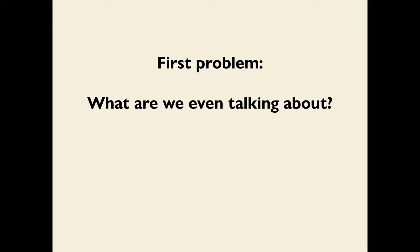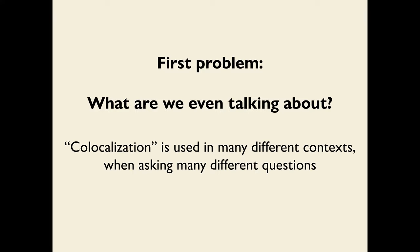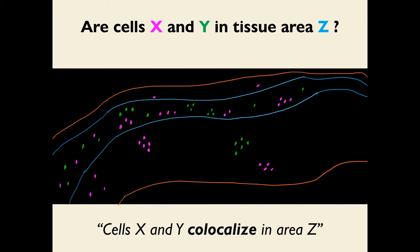There's a first problem with co-localization: what are we even talking about? Co-localization is a very loaded term used in many different contexts when asking many different questions. One version relates to the question: are cells of type X and Y in tissue area Z? You can imagine a tissue with an anatomical region Z containing cells of type X and Y — in that case, you might say that cells X and Y co-localize in area Z.